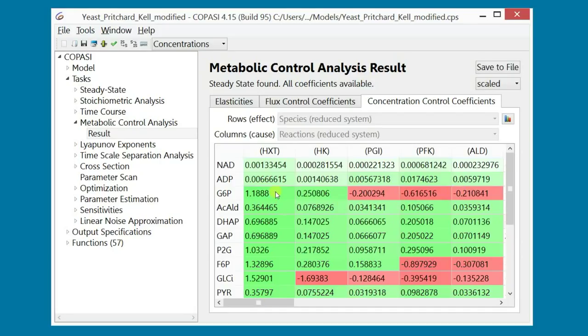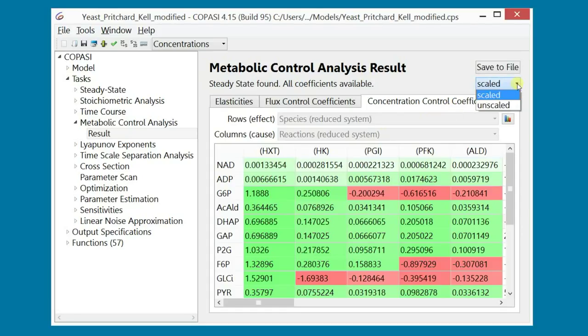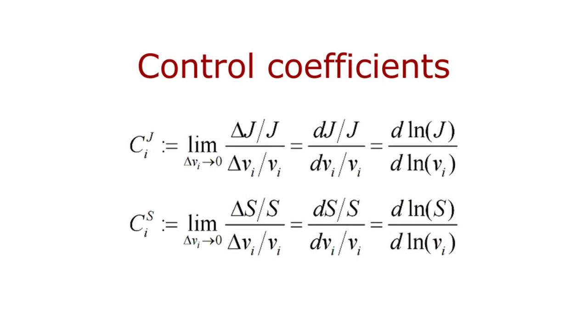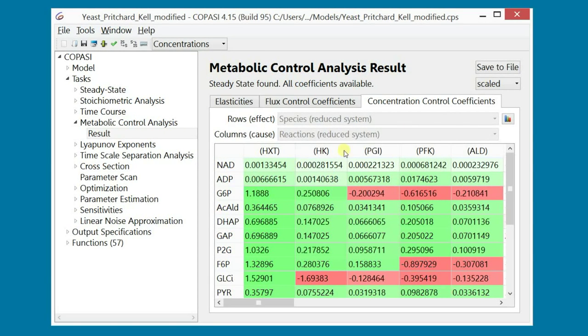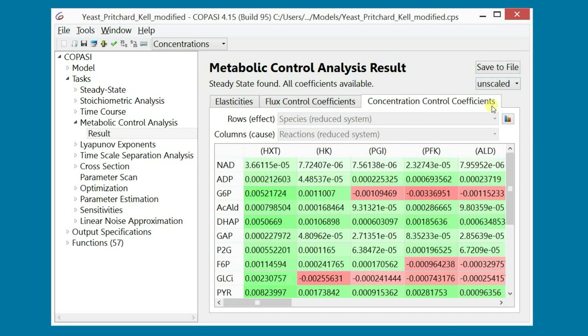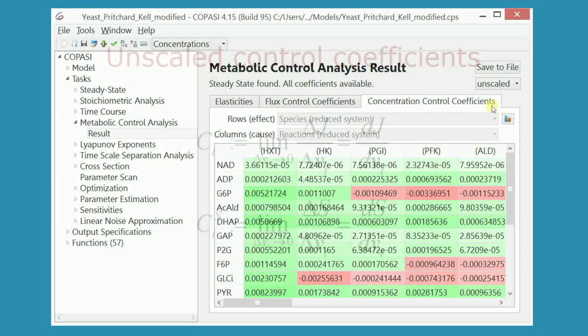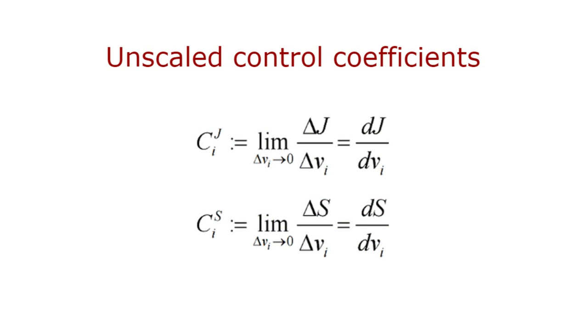At the top right corner of each of these tabs, there is a drop-down menu, from which you can choose between scaled and unscaled. The scaled control coefficients are those we have introduced before, and they are defined as the ratio between the relative change in the variable, either a flux or a concentration, and the relative change in the parameter, the enzyme activity. Sometimes, however, we are interested in the absolute change of these quantities, and this is when we use the unscaled control coefficients. The unscaled control coefficients are defined as the ratio between the absolute change in the variable and the absolute change in the parameter.